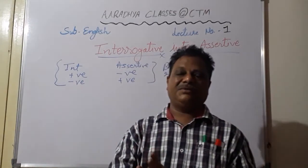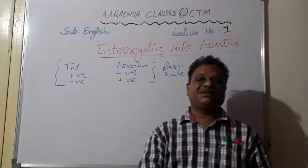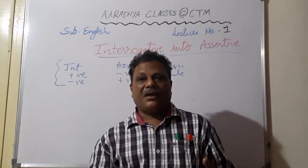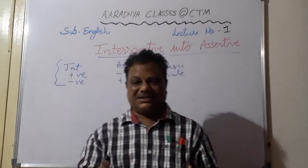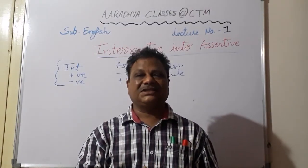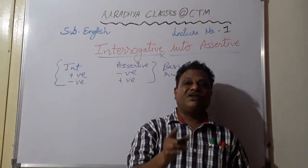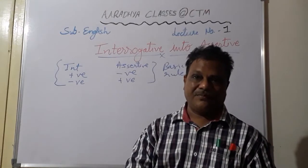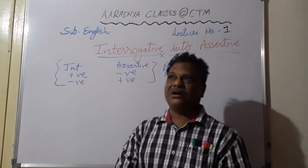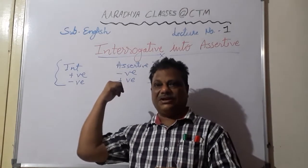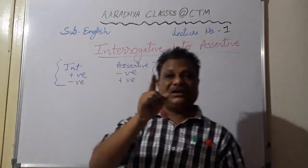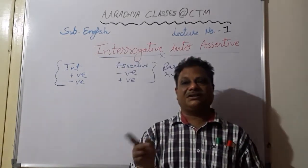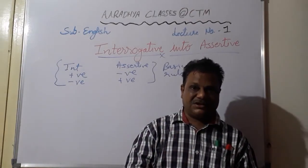The fourth type is the exclamatory sentence. In exclamatory sentences we express feelings of shock, surprise, disgust, like, dislike. Exclamatory sentences do not have negative form — they are always positive. There is also a question where you are asked to convert an exclamatory sentence into assertive, similar to what we are doing with interrogative into assertive. We will see that in my next video.